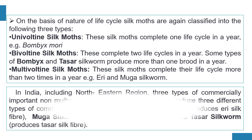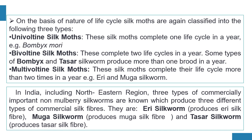For example, eri and muga silkworms are multivoltine. In India, including the northeastern region, three types of commercially important non-mulberry silkworms are known, which produce three different types of commercial silk fibers: the eri silkworm produces eri silk fiber, the muga silkworm produces muga silk fiber, and the tassar silkworm produces tassar silk fiber.